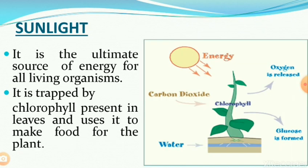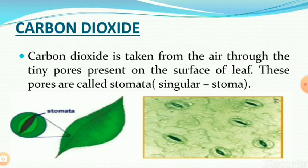Sunlight is the ultimate source of energy for all living organisms because plants prepare their food with the help of sunlight, and other organisms are dependent on plants either directly or indirectly. Carbon dioxide is obtained from the air through tiny pores present on the surface of the leaf.